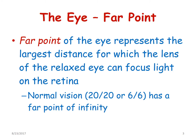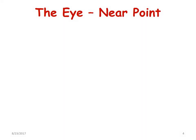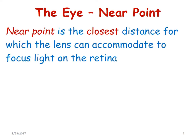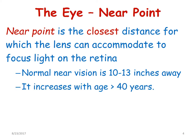If there is a far point, there should also be what is called a near point. The near point is the closest distance for which the lens can accommodate to focus light onto the retina. Normal near vision is about 10 to 13 inches away. It advances or increases with age, and above 40 years it starts to recede, so the near point or near vision recedes with age.